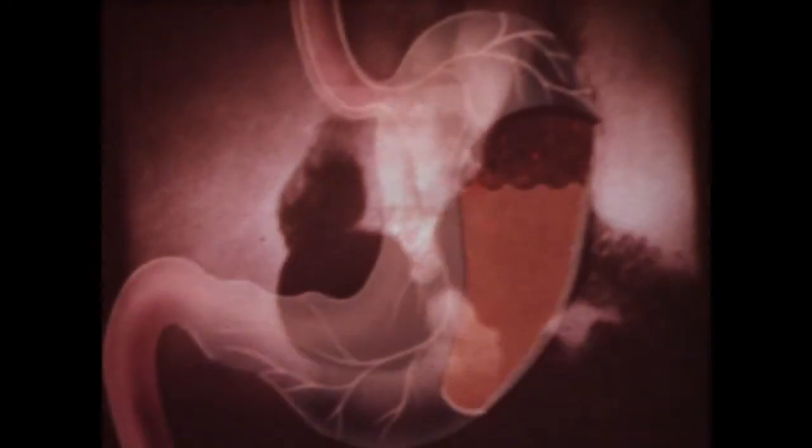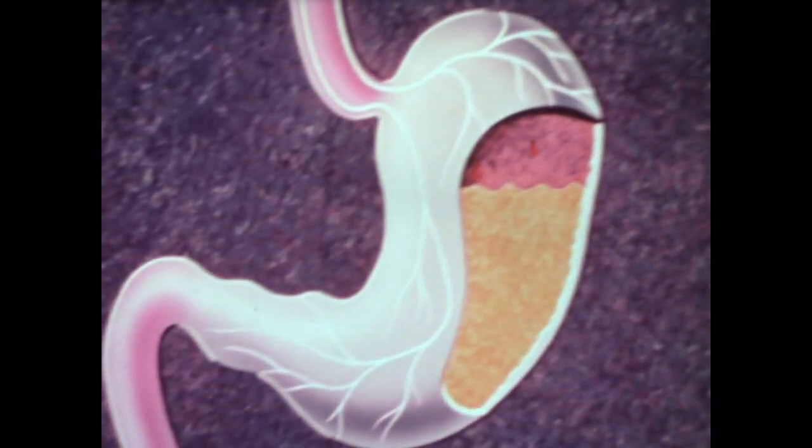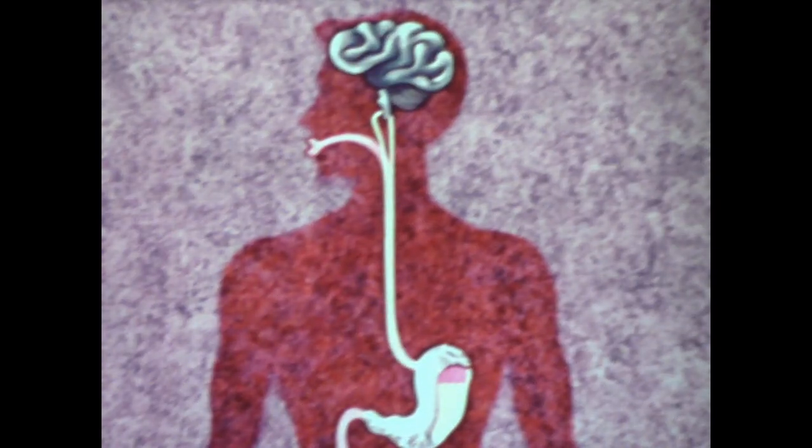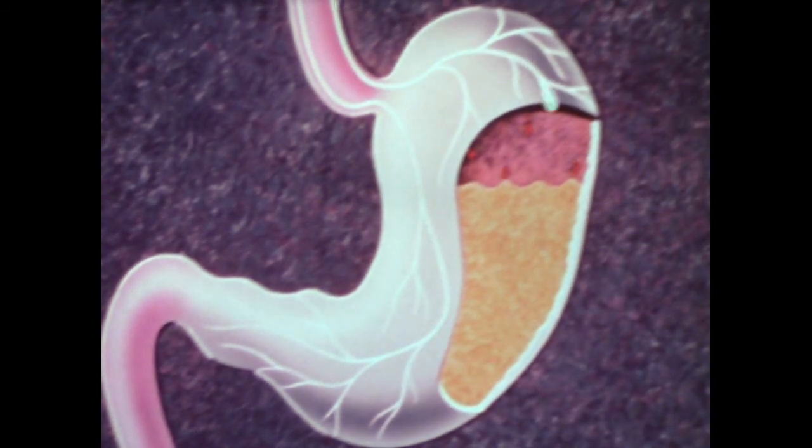As gastric digestion continues, strong waves of contraction mix food with gastric juice, gradually breaking down the contents of the stomach into smaller particles. These movements, as well as the secretion of gastric juice, are controlled in part by nerves. When food enters the stomach, it stimulates cells in the stomach wall, sending nerve impulses to the central nervous system. In turn, nerve impulses travel to the gastric glands, where they stimulate an increased flow of gastric juice.